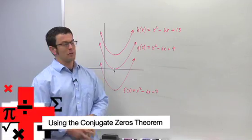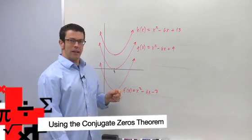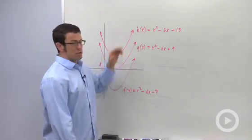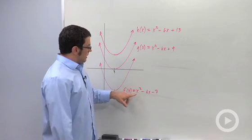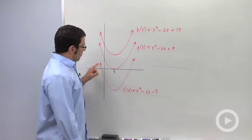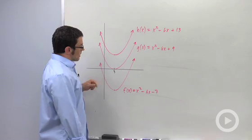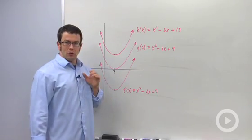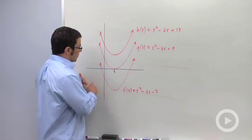I want to talk about the zeros of a polynomial function. Let's start by looking at three examples of quadratic functions, which are polynomials. Remember the graph of a quadratic is a parabola.